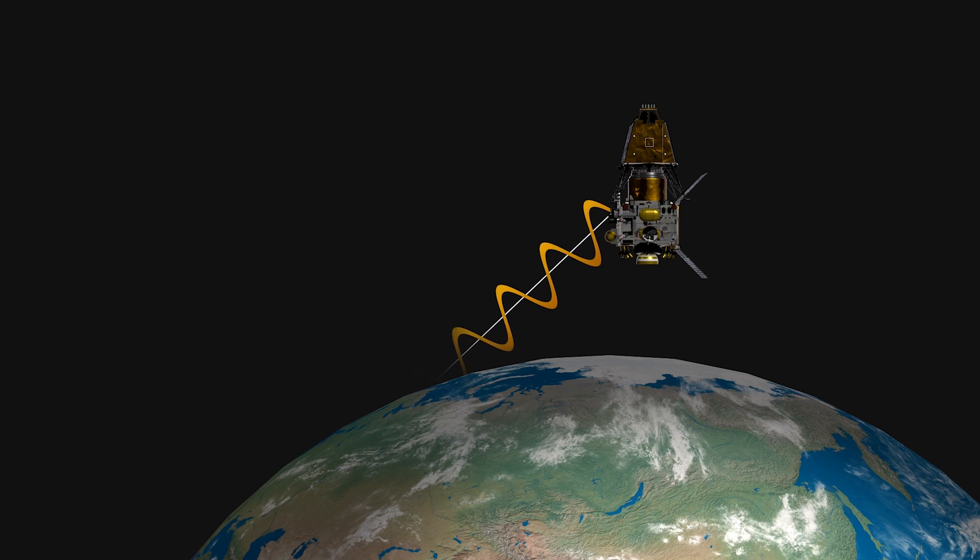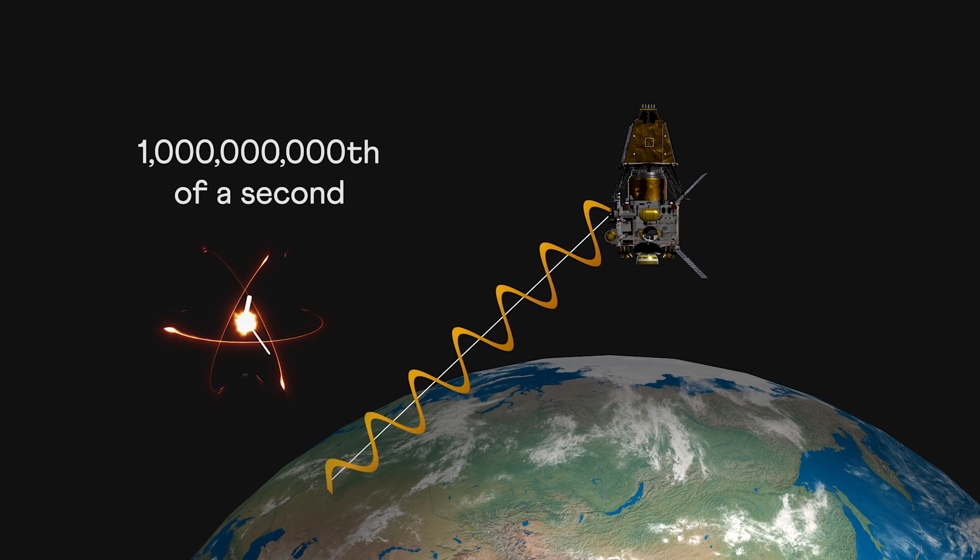Satellites send signals with timestamps, which are accurate up to a billionth of a second, thanks to the atomic clocks they use.